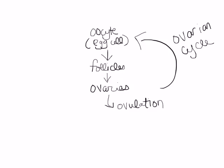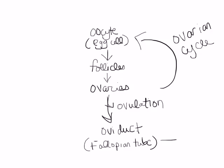Once an oocyte is released, it travels out of the ovary down a tube that we used to call the fallopian tube — we are now calling the oviduct, so that it relates more strongly to the ductus deferens in men. But if you remember it as fallopian tube, don't worry, I will still call it that most of the time. The fallopian tube heads into the uterus, and there's an ovary on each side — two ovaries and two oviducts, or fallopian tubes, heading into the uterus.